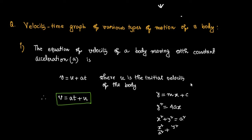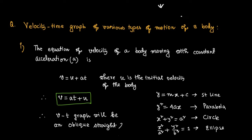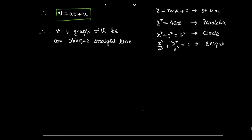This equation v = at + u is identical to the equation of a straight line y = mx + c — not a parabola, circle, or ellipse. That is why the velocity-time graph of a body moving with constant acceleration will be an oblique straight line with respect to the time axis.